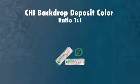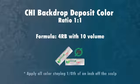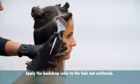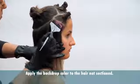Chi backdrop deposit color, ratio one to one. Formula 4RB with 10 volume. Apply all colors staying an eighth of an inch off the scalp. Apply the backdrop color to the hair not sectioned.